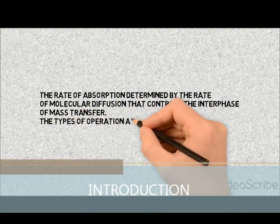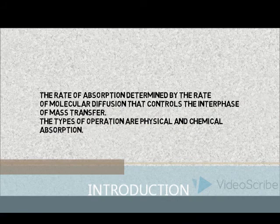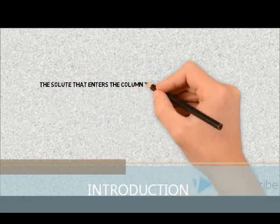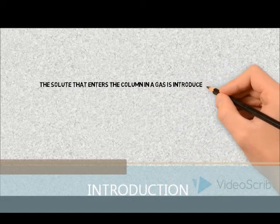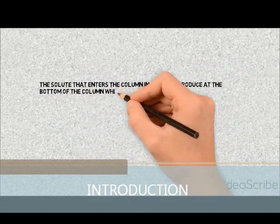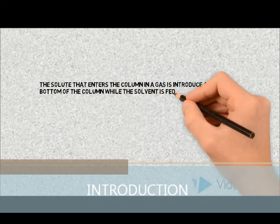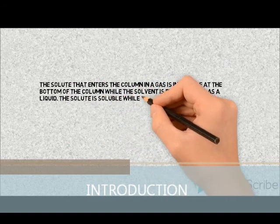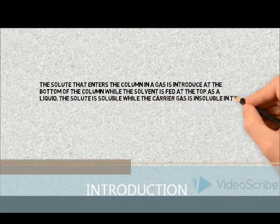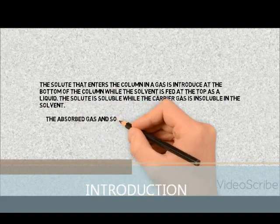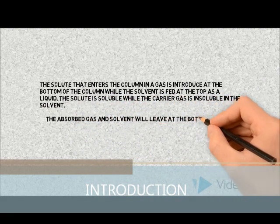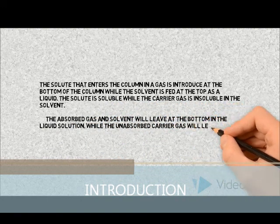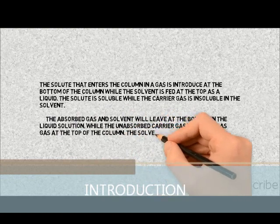The types of operation are physical and chemical absorption. The solute that enters the column as a gas is introduced at the bottom of the column, while the solvent is fed at the top as a liquid. The solute is soluble while the carrier gas is insoluble in the solvent. The absorbed gas and solvent leave at the bottom as a liquid solution, while the unabsorbed carrier gas leaves as gas at the top of the column.